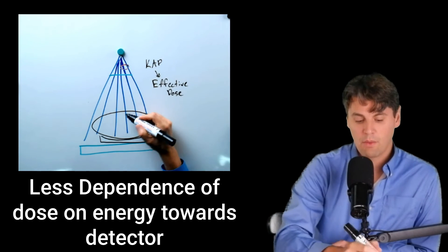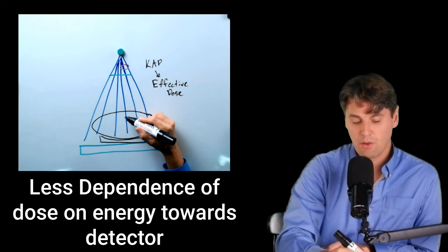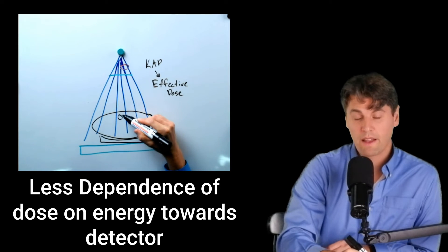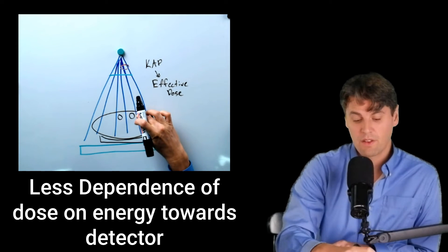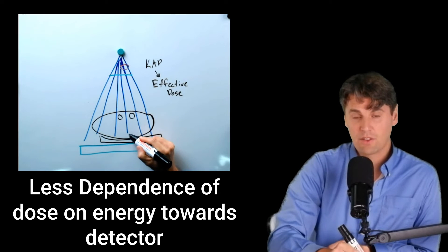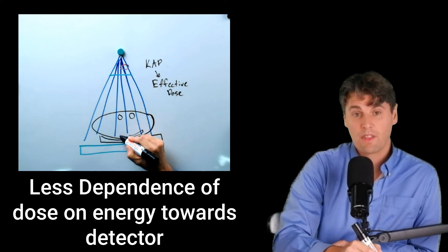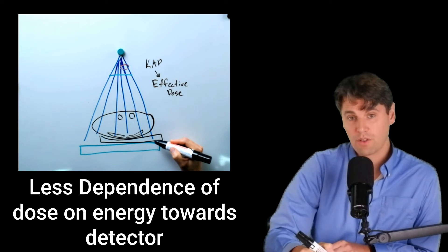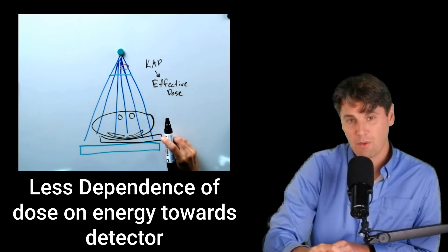When we have our Kerma area product, it's more strongly going to influence the organs which are towards the surface, and it's less strongly going to influence things that are towards the bottom that are closer to the image receptor, assuming that we're keeping the detector signal fixed.